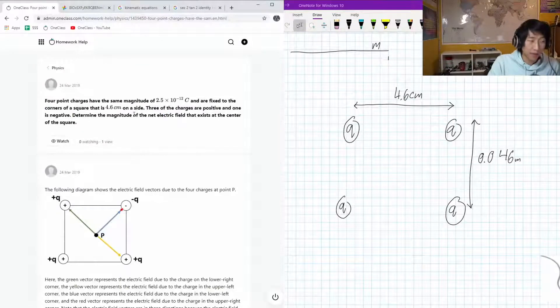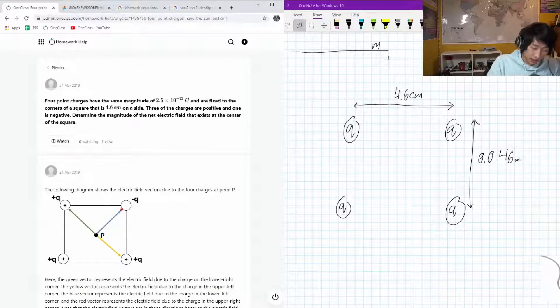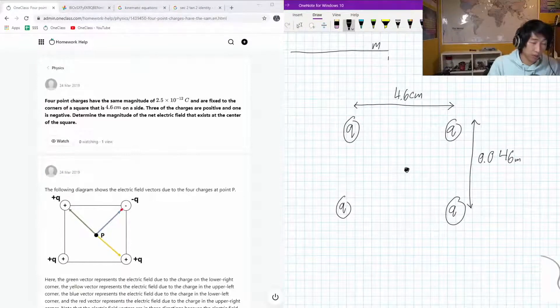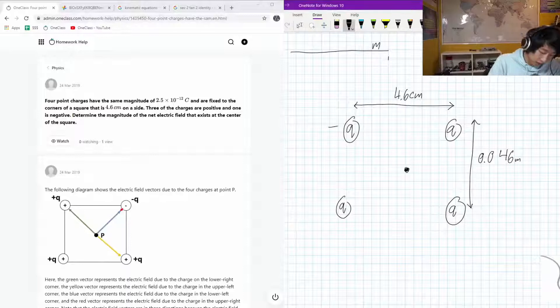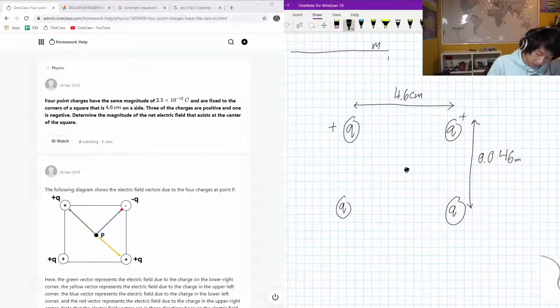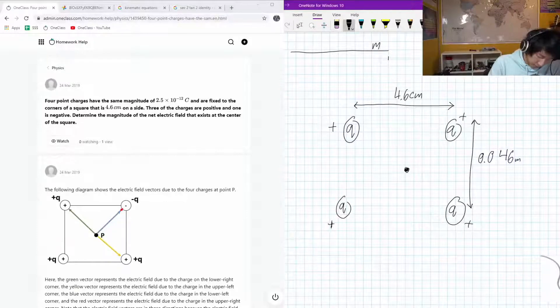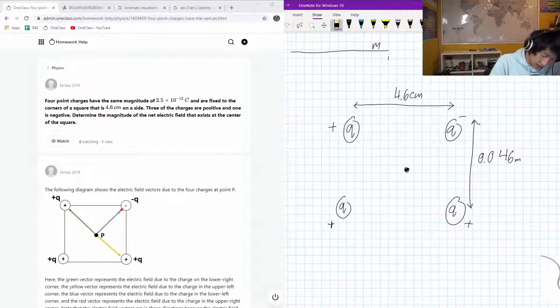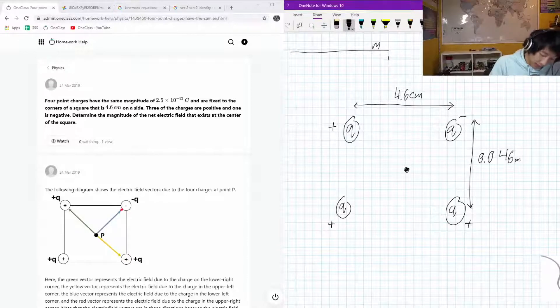Determine the magnitude of the net electric field that exists at the center here. Okay, so if three of them are positive and one of them is negative, let's call this one positive, this a positive, this a positive, and I'll actually change this one up here to be a negative so that it lines up with the diagram that we have down here.